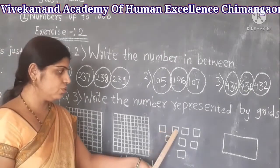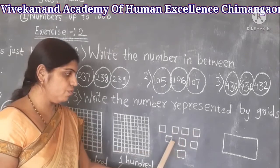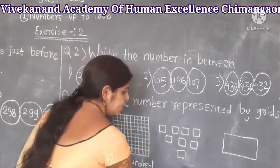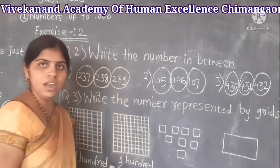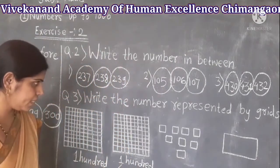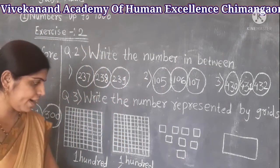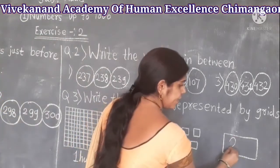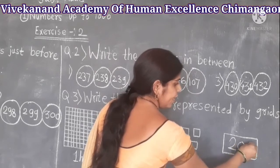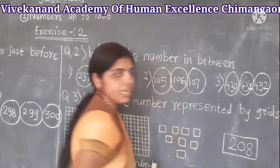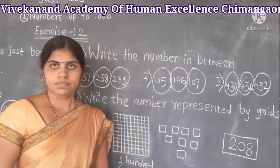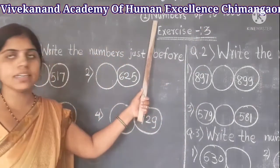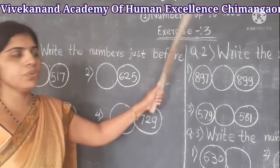Now we count the remaining ones: 1, 2, 3, 4, 5, 6, 7, 8 — so there are 8 ones. The total grids represent 200 plus 8, which gives us the number 208. Now we move to exercise 3 in the lesson Numbers up to 1000.